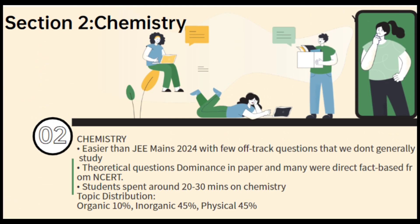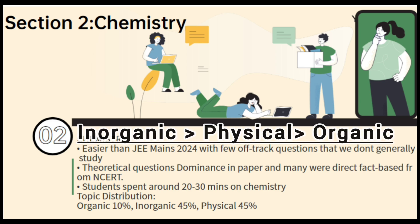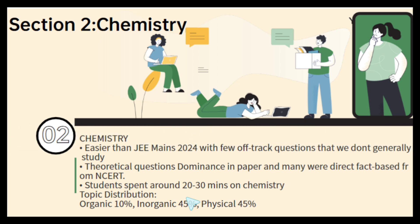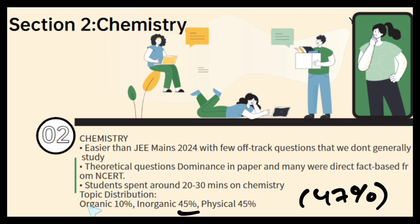Now let's jump to the Chemistry section. Inorganic and Physical Chemistry held more weightage compared to the Organic part. The average time duration a candidate spent on this section was around 30 to 35 minutes. In both shifts for 24th June, Inorganic Chemistry had the highest weightage — roughly about 47%, which is much larger than the Organic part.